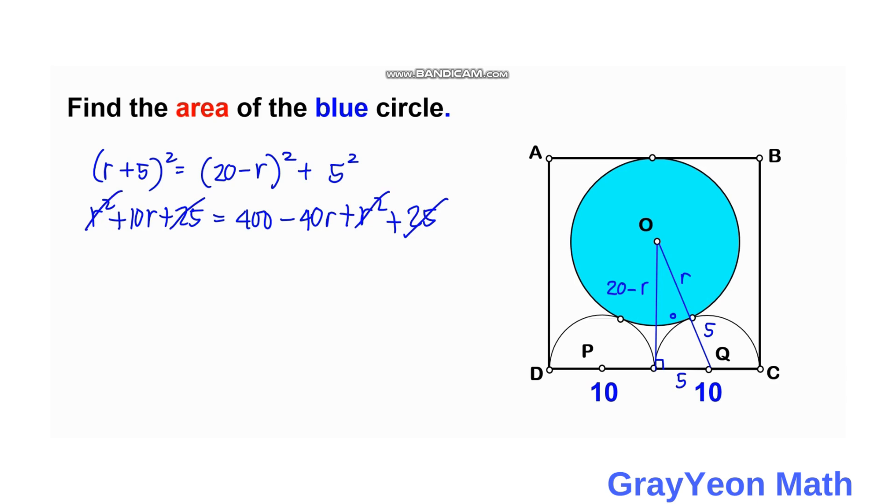We can put this negative 40R on the left hand side so we have 50R. 10R plus 40R is equal to 400. So 50R is equal to 400.